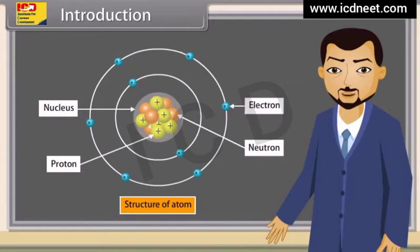Good question, Rakesh. As you know, all objects are made up of different materials like plastic, rubber, iron, etc. They have different arrangements and types of molecules, and a molecule is a group of two or more atoms. So the fundamental unit is the atom.